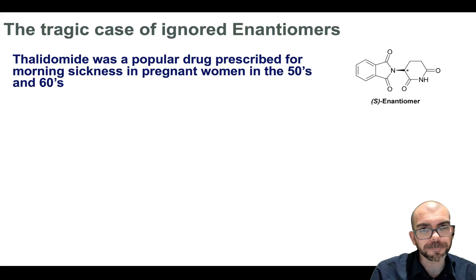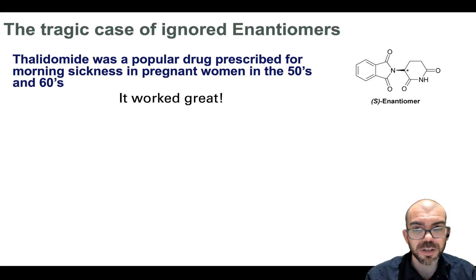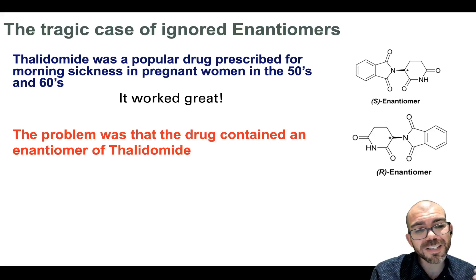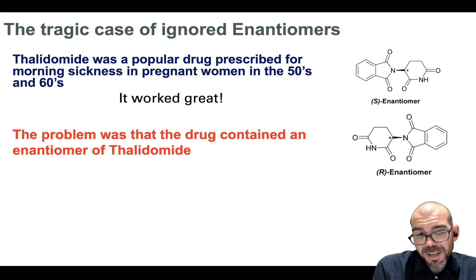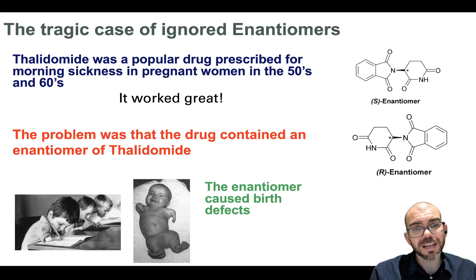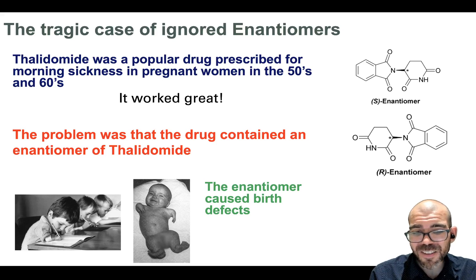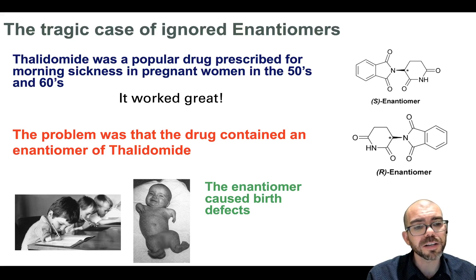This is why enantiomers are important. Thalidomide was a popular drug prescribed for morning sickness with pregnant women in the 50's and 60's. And here you can see a picture of one of the enantiomers. It was a success. The women who took it didn't experience any morning sickness when they were pregnant. Problem was, scientists at the time weren't aware that there was an enantiomer of this drug. You can see it right there. Didn't think much of it because it's just the mirror image, right? Doesn't really do anything. Well, not so much. Turns out that the enantiomer of thalidomide actually caused devastating birth defects. It caused malformed limbs. So this is why it's essential as biologists that we're aware of all the different isomers because every single difference in structure can cause a difference in function.